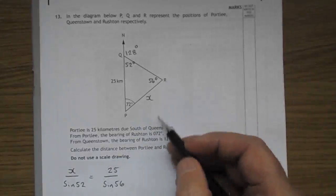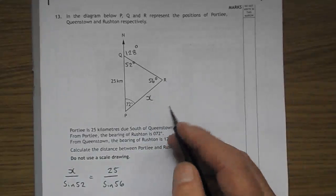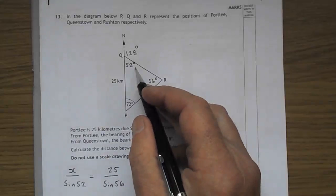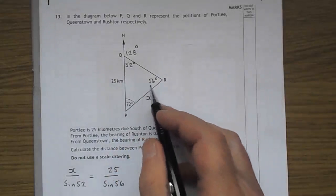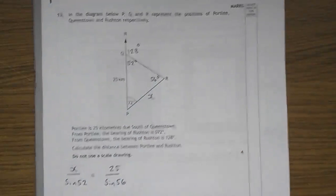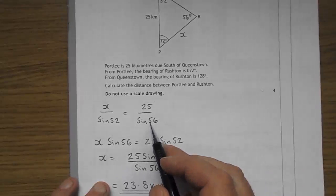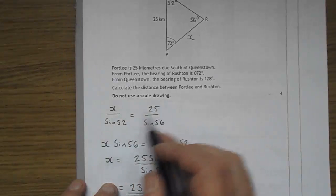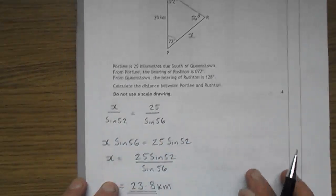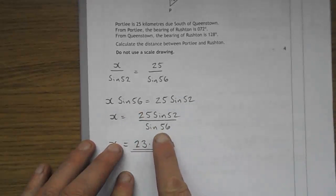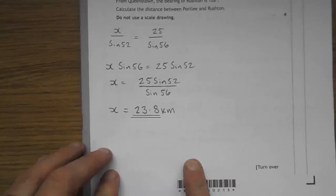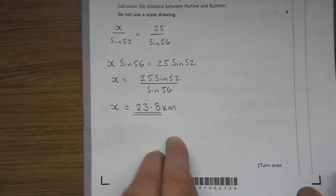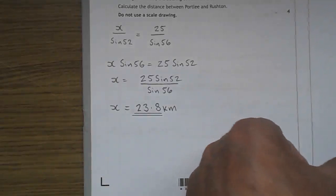The question they're asking is calculate the distance between Portleigh and Rushtown. There today, I'll just put X. It's a sine rule question. X over sine 52 is 25 over sine 56. Cross multiply. You're way out of trouble here. X sine 56 is 25 sine 52. And then move the sine 56 back down. Again, it's a bit like changing the subject of a formula. Put that into your calculator and you get 23.8.